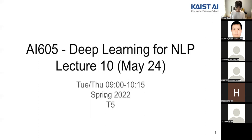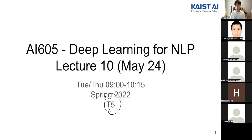Today we're going to talk about T5 mainly, and some other models too. After BERT — we talked about BERT last lecture — that basically opened the era of large pre-trained language models and there were a lot of variants. The purpose of this lecture is to learn about one of the major advancements, which is T5, but also to talk about a few other models and what kinds of things people have tried.